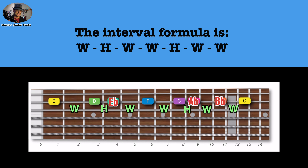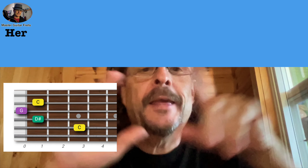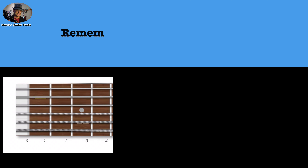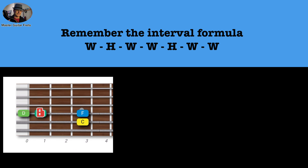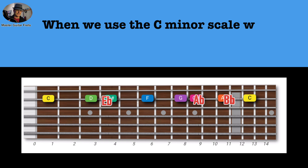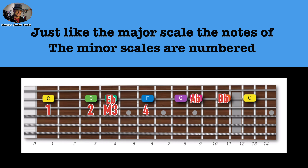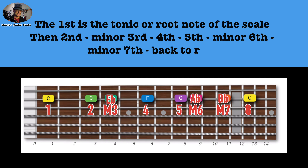The interval formula is whole, half, whole, whole, half, whole, whole. Here is the open C minor chord — not a widely used chord, but let's build the C minor scale within the chord notes anyway. When we use the C minor scale, we are in the key of C minor. Minor scales differ from major in that the melodies have a sadder feel. Just like the major scale, the notes of the minor scale are numbered: the first is the root, then we have a second, a minor third, a fourth, a fifth, a minor sixth, a minor seventh, and back to the root C.